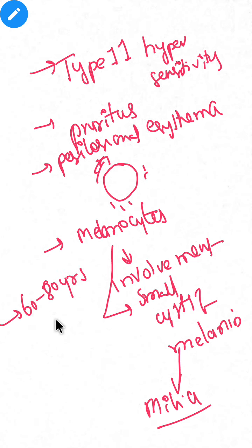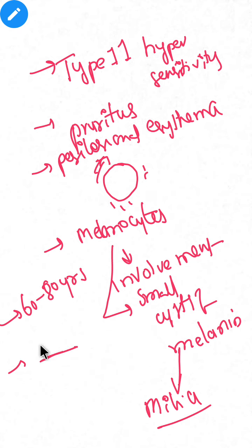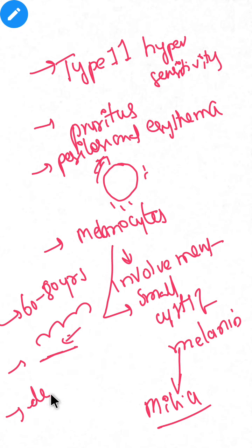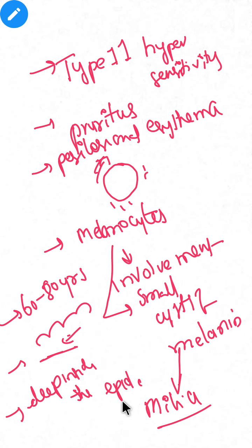The age of onset is 60 to 80 years. The blisters are formed sub-epidermally because they are formed between the basement membrane and stratum basale. So we can say they are formed deep inside the epidermis, and because they are deep inside, they are tense.